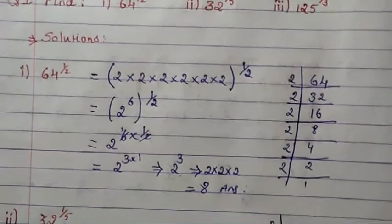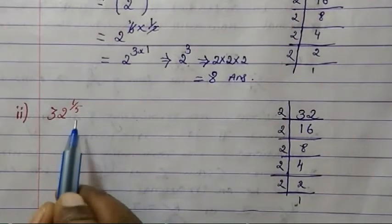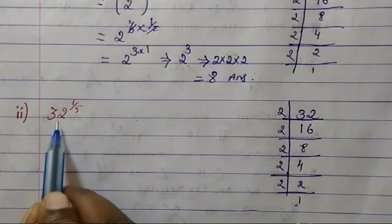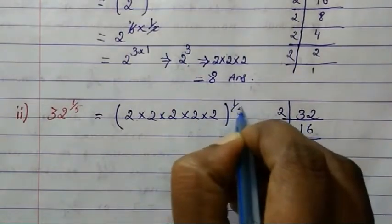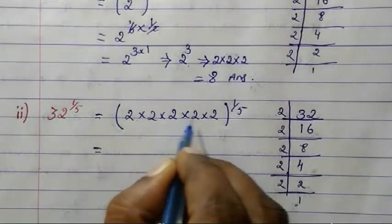Same way, the next question: 32^(1/5). We have to find out the value for this. Prime factorization of 32, I've done it here. There are 1, 2, 3, 4, 5 times 2s. We write down the power as it is. This is 5 times 2, so this will get cancelled. We will have 2^1, which equals 2. This is the answer.